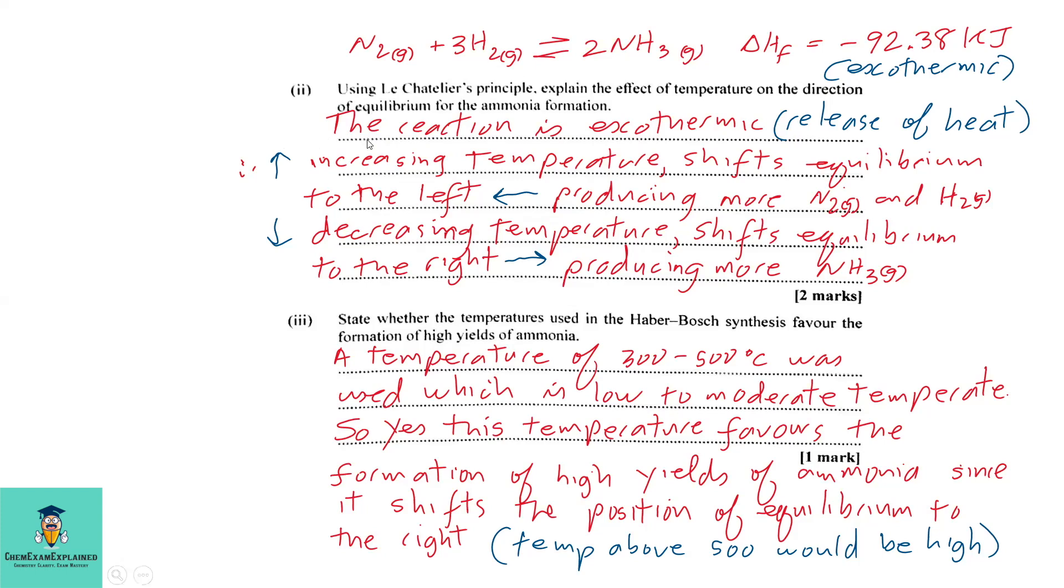So in answer to the question, the reaction is exothermic. Therefore, increasing temperature shifts equilibrium to the left, producing more N2 and H2. So that is not good if you want to produce more ammonia. So high temperature would not favor the production of ammonia. Decreasing the temperature would shift the equilibrium to the right, producing more ammonia. So for this reaction, low temperature is the best condition to produce more ammonia.